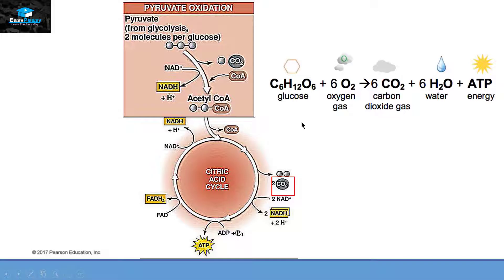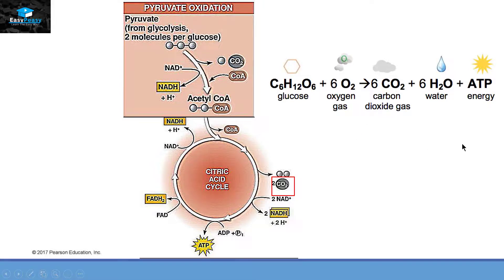The remaining energy is released in the form of energy carriers, NADH and FADH₂, which will enter the electron transport chain where they will be converted into ATP molecules. The electrons released in this process will be gained by the final electron acceptor, oxygen, which will then convert itself into water molecules.